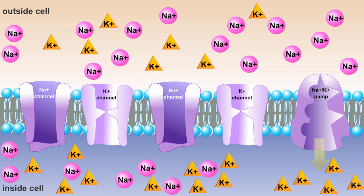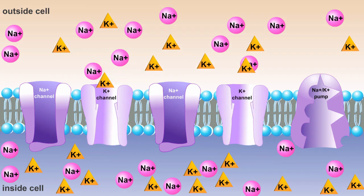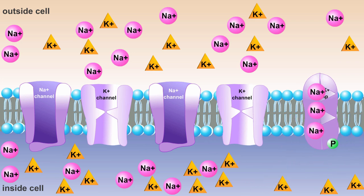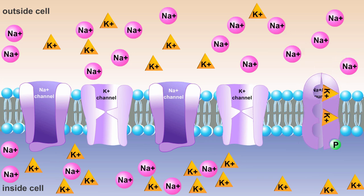By coordinating the activity of these channels, the cell is able to effectively control the movement of ions. The channels allow for the rapid movement of ions across the membrane, and the pump restores the ions to their original positions. This is exactly what happens when the neurons in your body generate a signal to be sent to the brain.